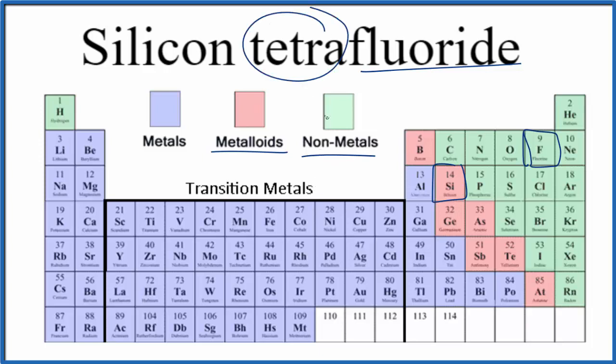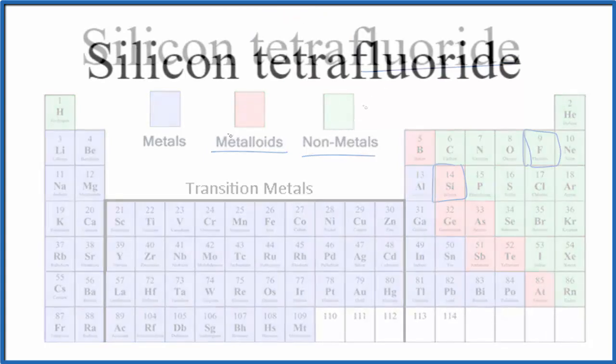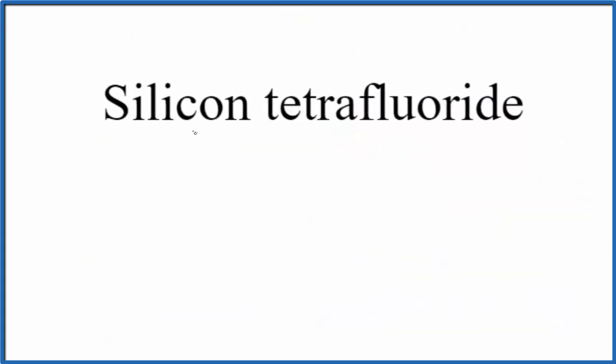That's why we have the prefixes here. So let's write the formula for silicon tetrafluoride. First we'll write the element symbol for silicon, that's Si, and then fluoride, that's just F. Since there's nothing written before silicon, we have one of those.